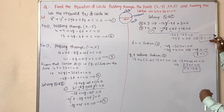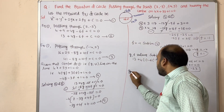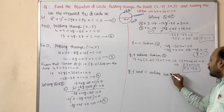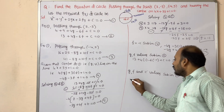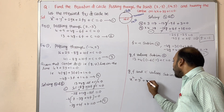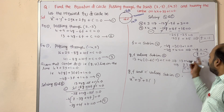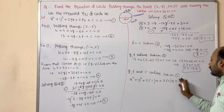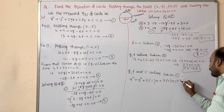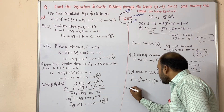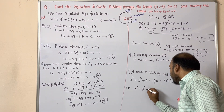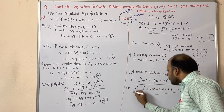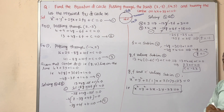Substitute the values g = 1, f = -1, and c = -23 into the general equation of a circle to get the required equation: x² + y² + 2(1)x + 2(-1)y + (-23) = 0, which simplifies to x² + y² + 2x - 2y - 23 = 0.